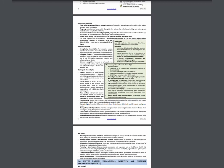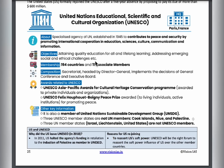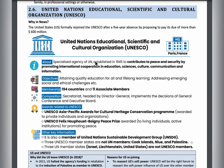The next topic is UNESCO — the United Nations Educational, Scientific and Cultural Organization. UNESCO is a specialized agency of the United Nations that consists of 194 countries and 11 associate members. Its main objective is to attain quality education for all and to address social and ethical challenges. It contributes to promoting international cooperation in education, sciences, culture, communication, and information.